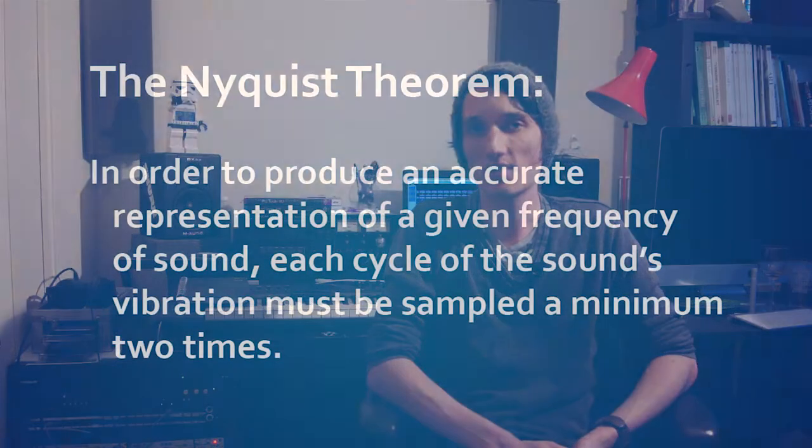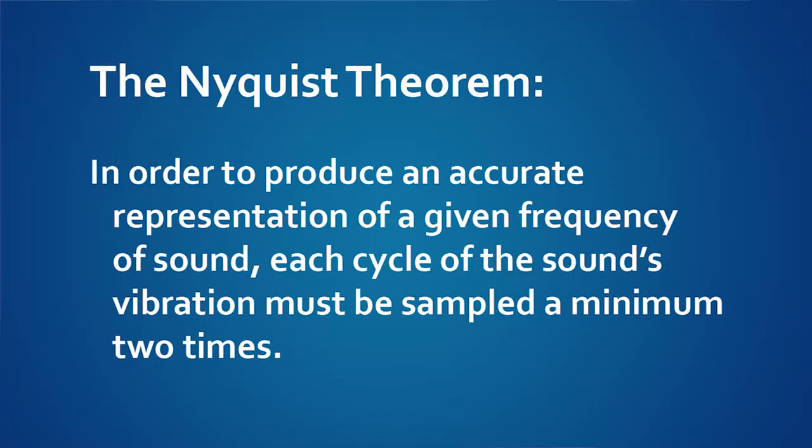Now we need to look at the Nyquist theorem. In order to produce an accurate representation of a given frequency of sound, each cycle of the sound's vibration must be sampled a minimum of two times. Humans can hear from around 20Hz to 20,000Hz, so the minimum sample rate must be at least 40,000Hz. Frequencies above the human hearing spectrum that we can't actually perceive as sound still have an effect on the sounds that we do hear, so some claim it's important to sample high enough to capture those as well.